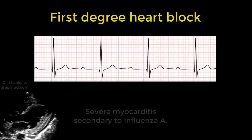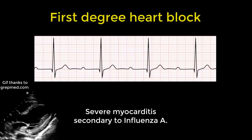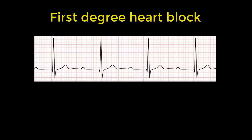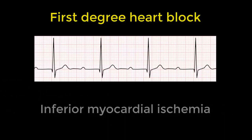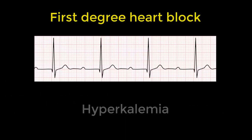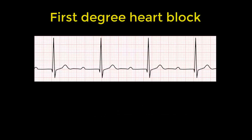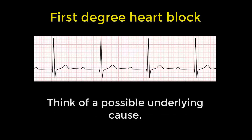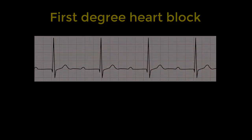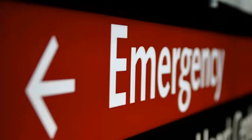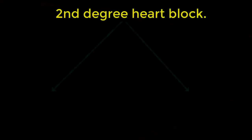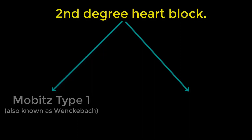Myocarditis can also cause it, as can inferior myocardial ischemia and hyperkalemia. In itself it's not a clinical concern, but should direct your mind towards an underlying cause. Next: second degree heart block. There are two types — Mobitz type one and Mobitz type two.